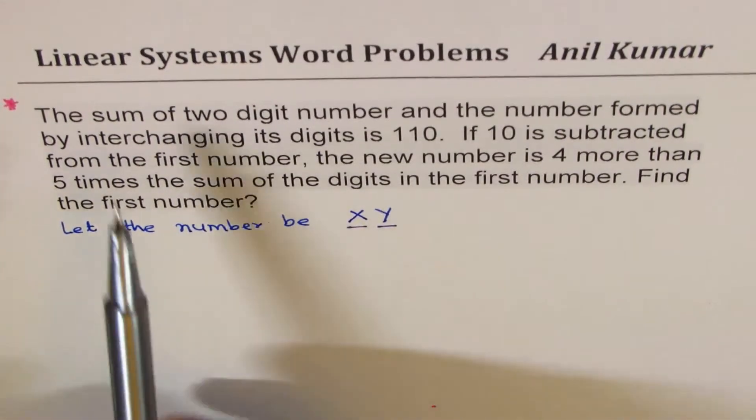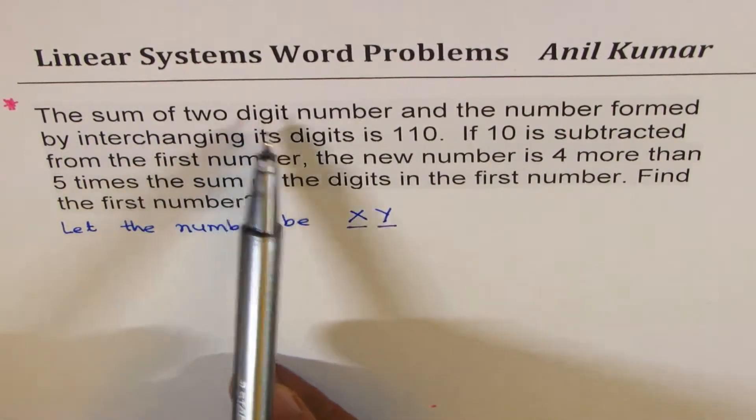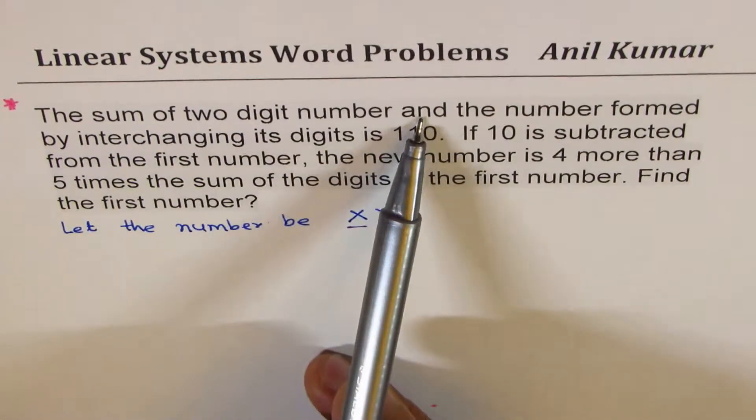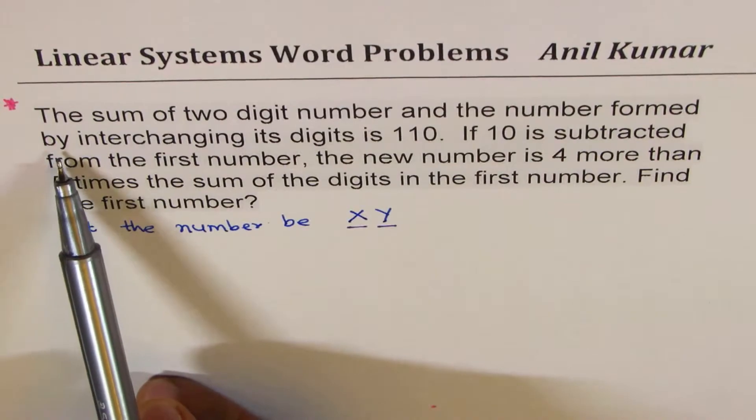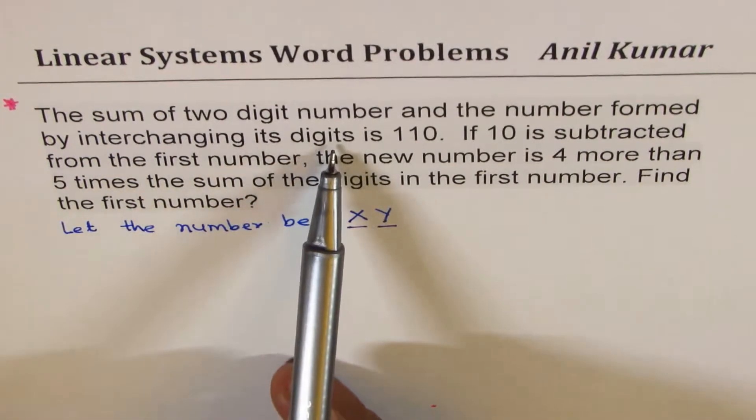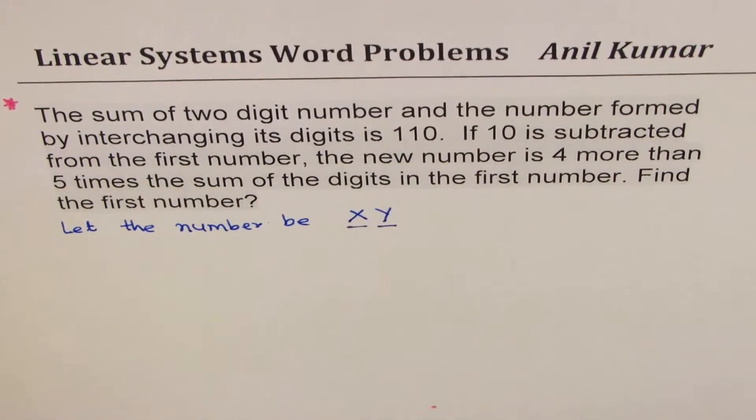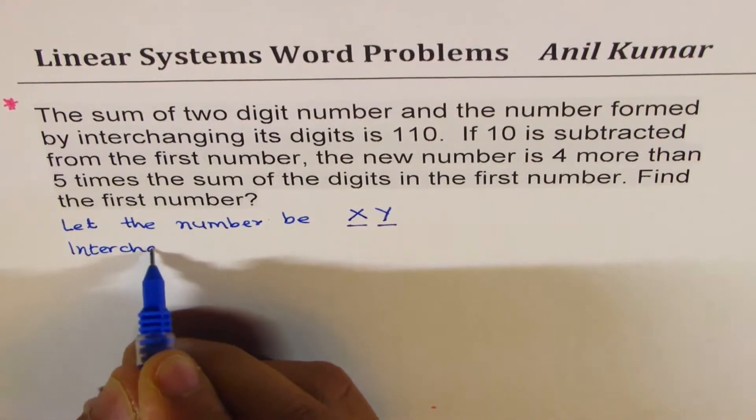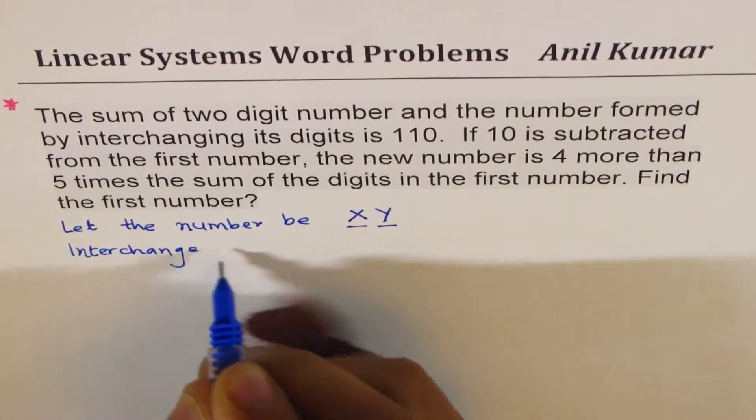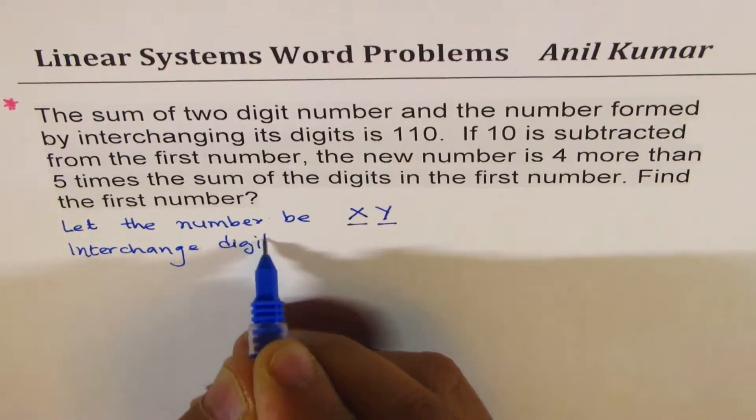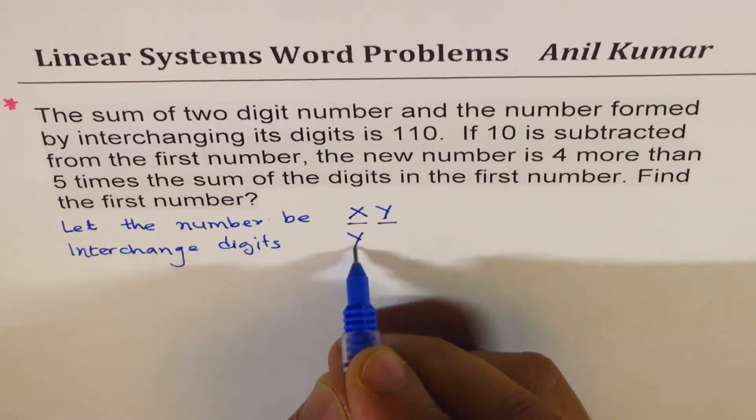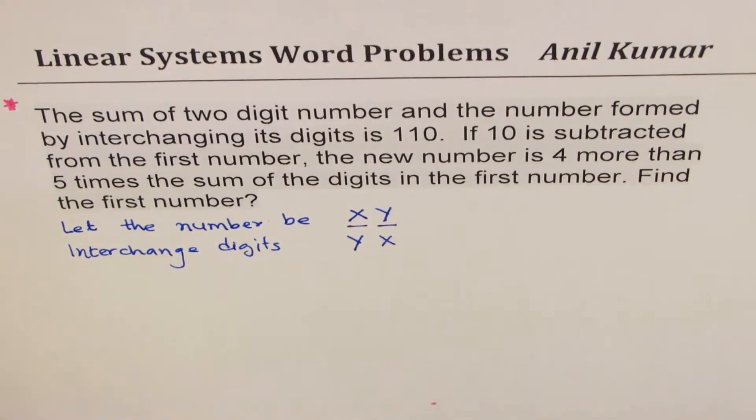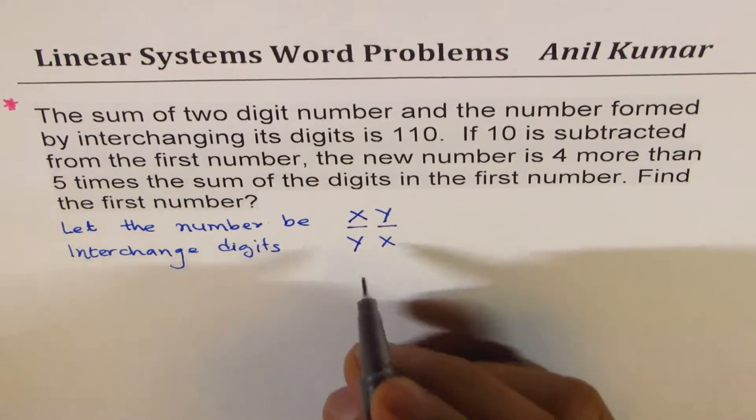So the sum of two digit number and number formed by interchanging its digit is 110. So if I interchange digits, it becomes y, x.